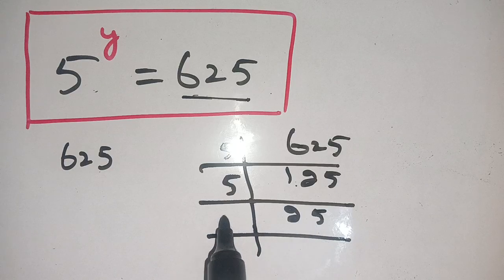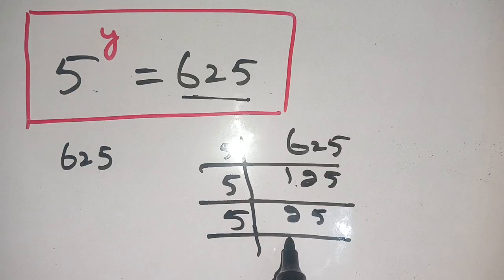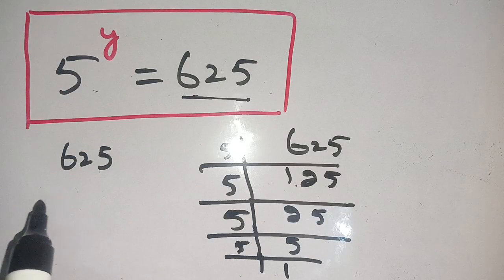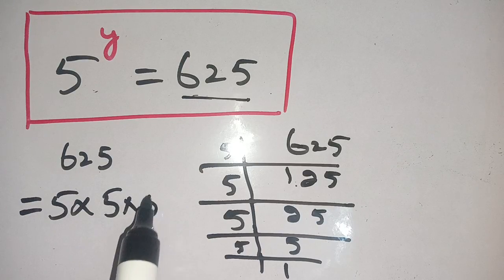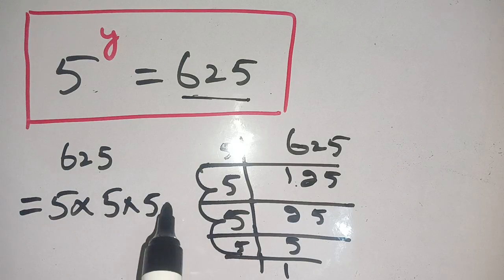And it also goes with 5. Thus 5 times 5 is 25, and 5 times 1 is 5. Thus 625 can be written as 5 times 5 times 5 times 5.